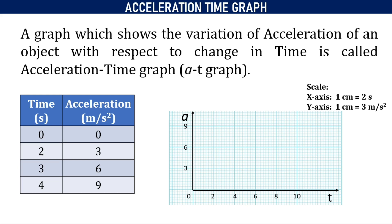When time is zero, acceleration is also zero. Therefore, our graph starts from the origin. Similarly, we mark different points and then join them — we will get a straight line. If you want more information about plotting the graph, go to the 'plot graph' video. The link is provided in the i-button above and also in the description box.